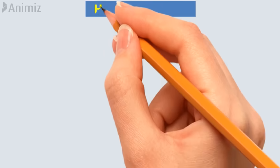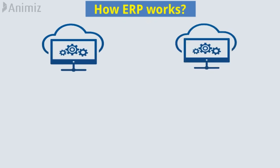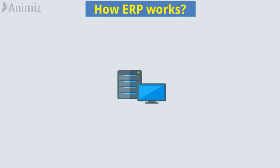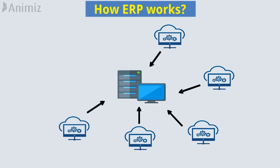An ERP system is made up of integrated modules or business applications that communicate with each other and share a common database. Every ERP module typically focuses on one business area, but they work together using the same data to meet the company's needs.